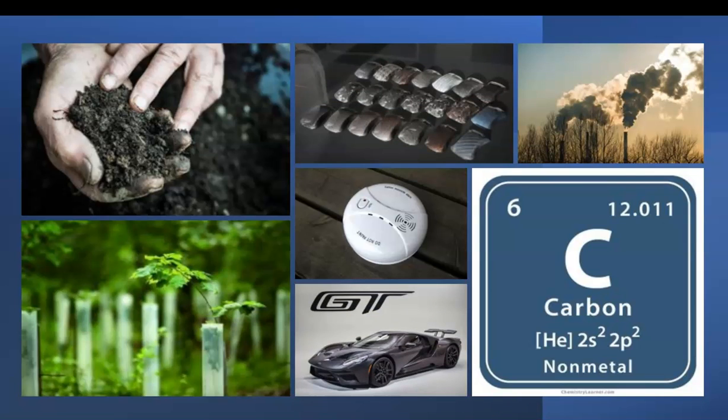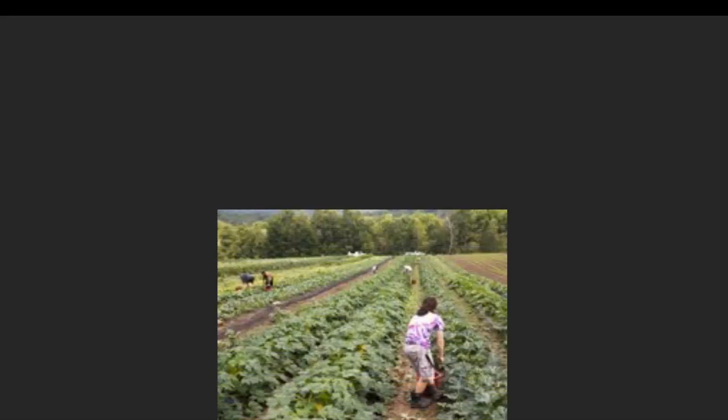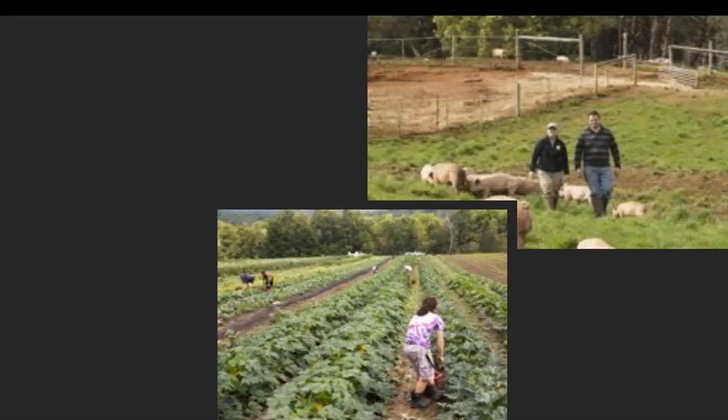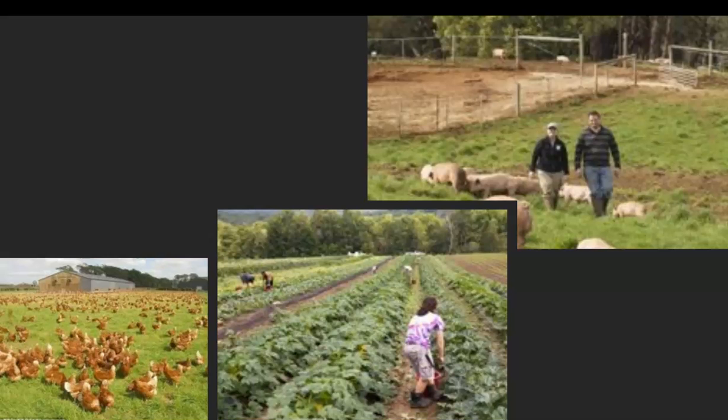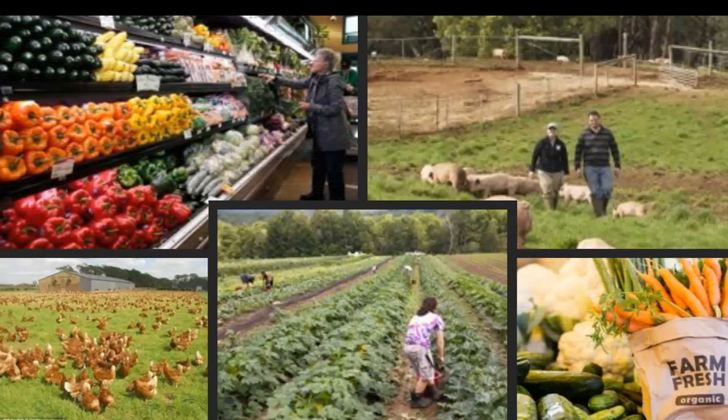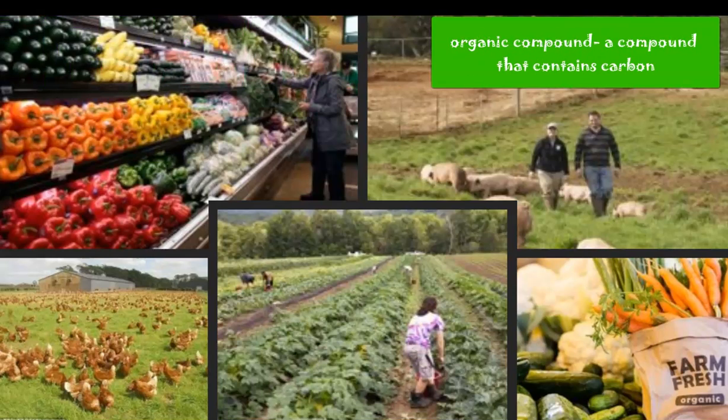Now, what do you think about when you hear the word organic? Some people may think about like a free-range farm or a certain section of the grocery store. Well, in the biological sense, when we say organic, an organic compound is a compound that contains carbon. That's it. That's the definition of organic in the biological sense.